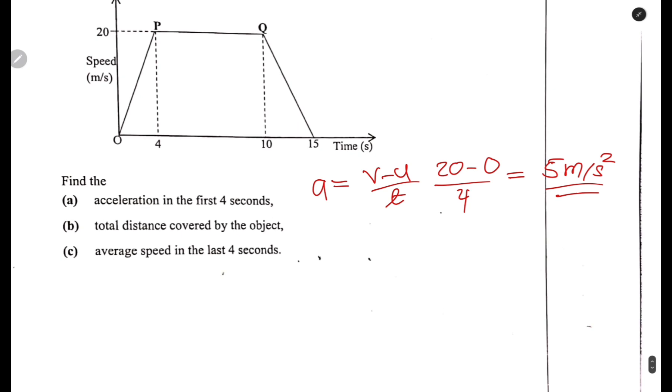Then part (b): total distance covered by the object. Distance equals the area of this whole shape, which is a trapezium. So we're going to say a plus b, then multiply by height over 2. We can choose a from here up to there, or from here up to there. Whichever you choose for b and a, it doesn't really matter where you start.